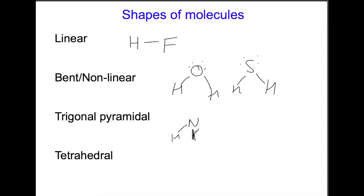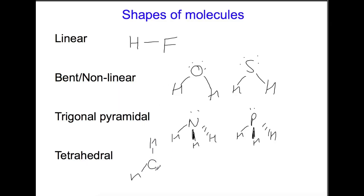Trigonal pyramidal compounds such as ammonia NH3 and PH3 have a shape that looks like a pyramid, because they each have a lone pair on the central atom which pushes these bonds down rather than being in a trigonal planar arrangement. Methane is an example of a tetrahedral molecule. There are four pairs of electrons around the carbon in the centre and they try to get as far away from each other as possible, so you end up with a tetrahedral arrangement rather than a square planar arrangement.